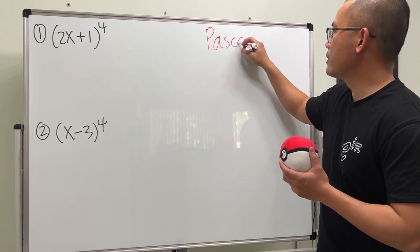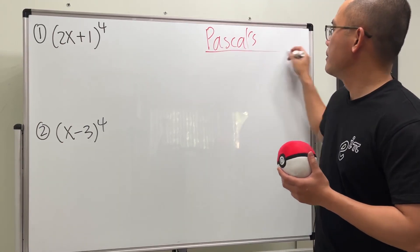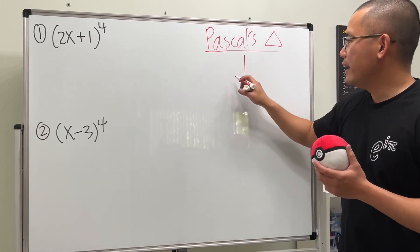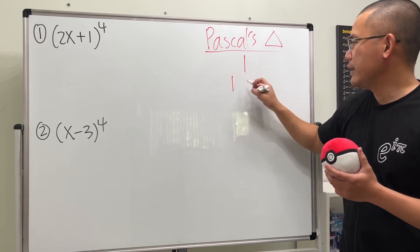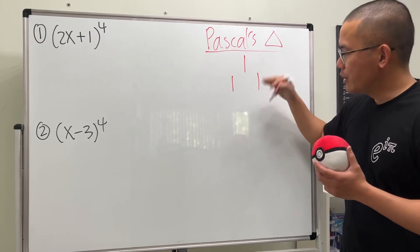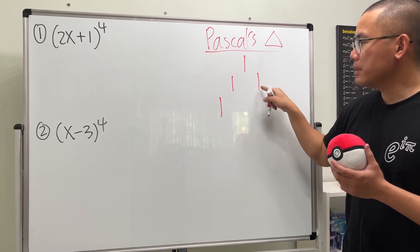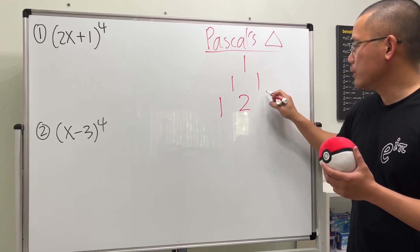Check this out. This is how the Pascal's triangle looks like. We start with one, and then you always start with one, and then you end with one. Keep that in mind. And then we keep going down. The next row is one. And then right here, we do one plus one, which is two. And then we end with one.